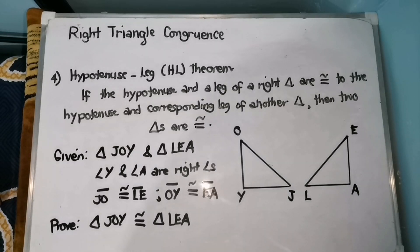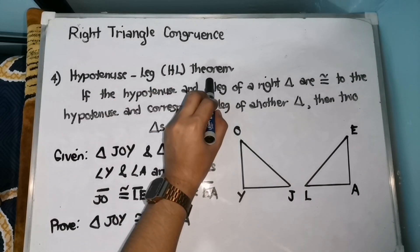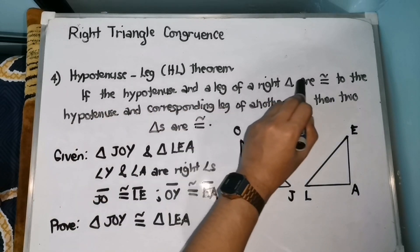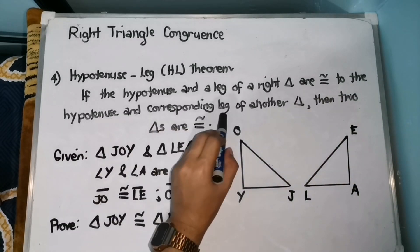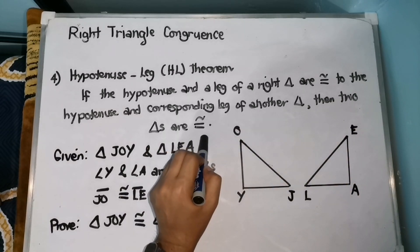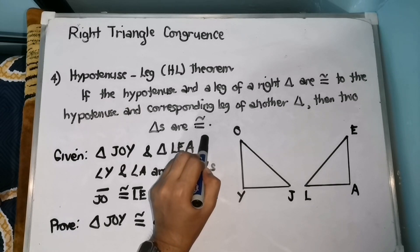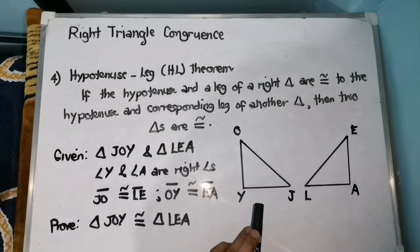For our last theorem under right triangle congruence, we have the Hypotenuse-Leg or HL theorem. It states that if the hypotenuse and a leg of a right triangle are congruent to the hypotenuse and corresponding leg of another triangle, then the two triangles are congruent. We can prove congruence by applying the HL theorem if the hypotenuse and leg of the two triangles are congruent.